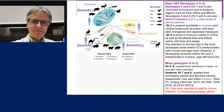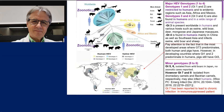Genotype three is present worldwide in humans and various hosts such as wild boars, deer, mongooses, and Japanese macaques. Genotype four is found in humans mainly in China, as well as other parts of Asia, and also in swine, wild boar, and sheep. Pay attention to the fact that in the most developed areas where genotype three predominates, both humans and pigs have the same genotype, clearly suggesting that in this region the transmission would be zoonotic by consumption of meat from these animals.